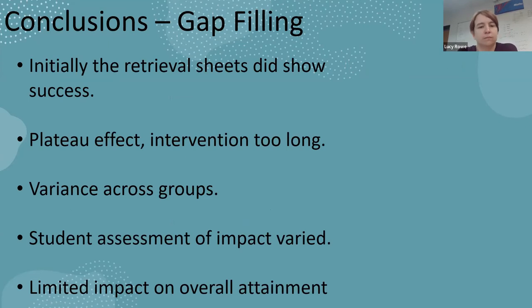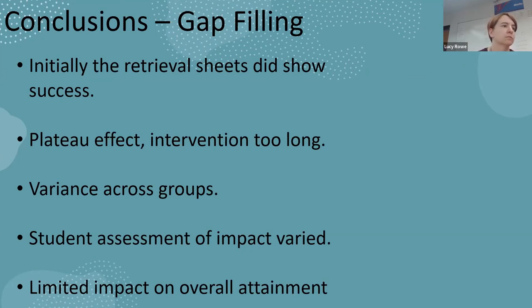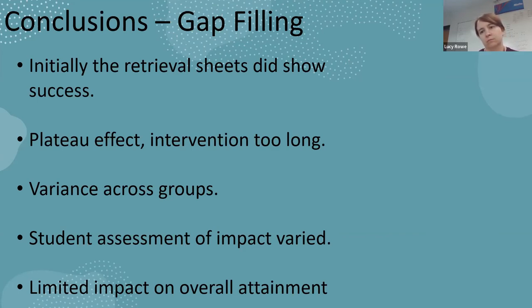When focusing on the results from the retrieval sheet trackers, we did find that initially the retrieval sheets showed some success, with results generally improving rapidly over the first couple of lessons. However, further broken-down analysis question by question revealed that this wasn't necessarily consistent improvement by topic. For example, some students got one question correct in one lesson and then got the exact same topic incorrect the next lesson, although their overall score was improving as they were getting different questions correct. We noticed definite variance across groups in terms of both outcome and perception.